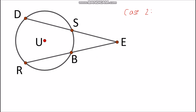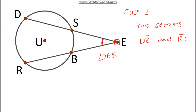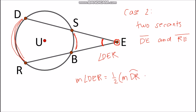Case 2 involves two secants. We have segments DE and RE, intersecting at exterior point E, forming angle DER. To get the measurement of angle DER, take half the difference of the two intercepted arcs: the larger arc DR and the smaller arc SB. So: measurement of angle DER = ½ × (arc DR − arc SB).